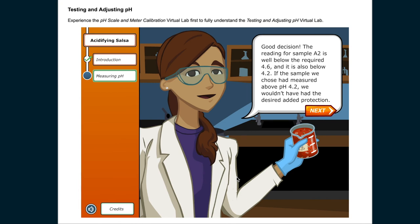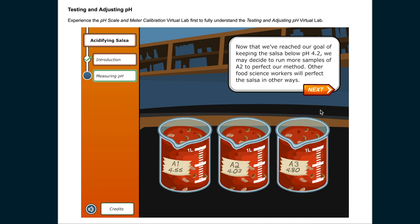Good decision! The reading for sample A2 is well below the required 4.6, and it is also below 4.2. If the sample we chose had measured above pH 4.2, we wouldn't have had the desired added protection.